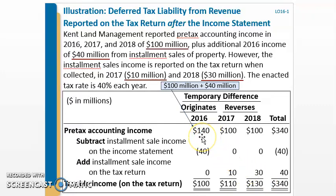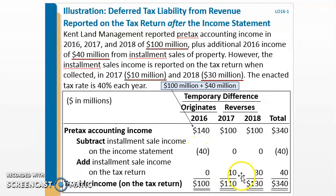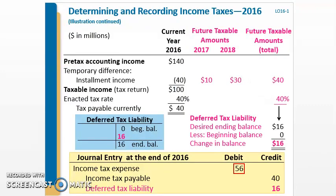This is very similar to how all the grids will look throughout this chapter — it's showing you the income and the item causing the temporary difference so you can see the balancing. At the end of the day, you recognize the same total amount of money — $340 million — regardless of whether you look at financial statement income or taxable income. It's just about the timing: $100 million in one year, $110 million, $130 million. Once you get used to the format, it won't be so bad.